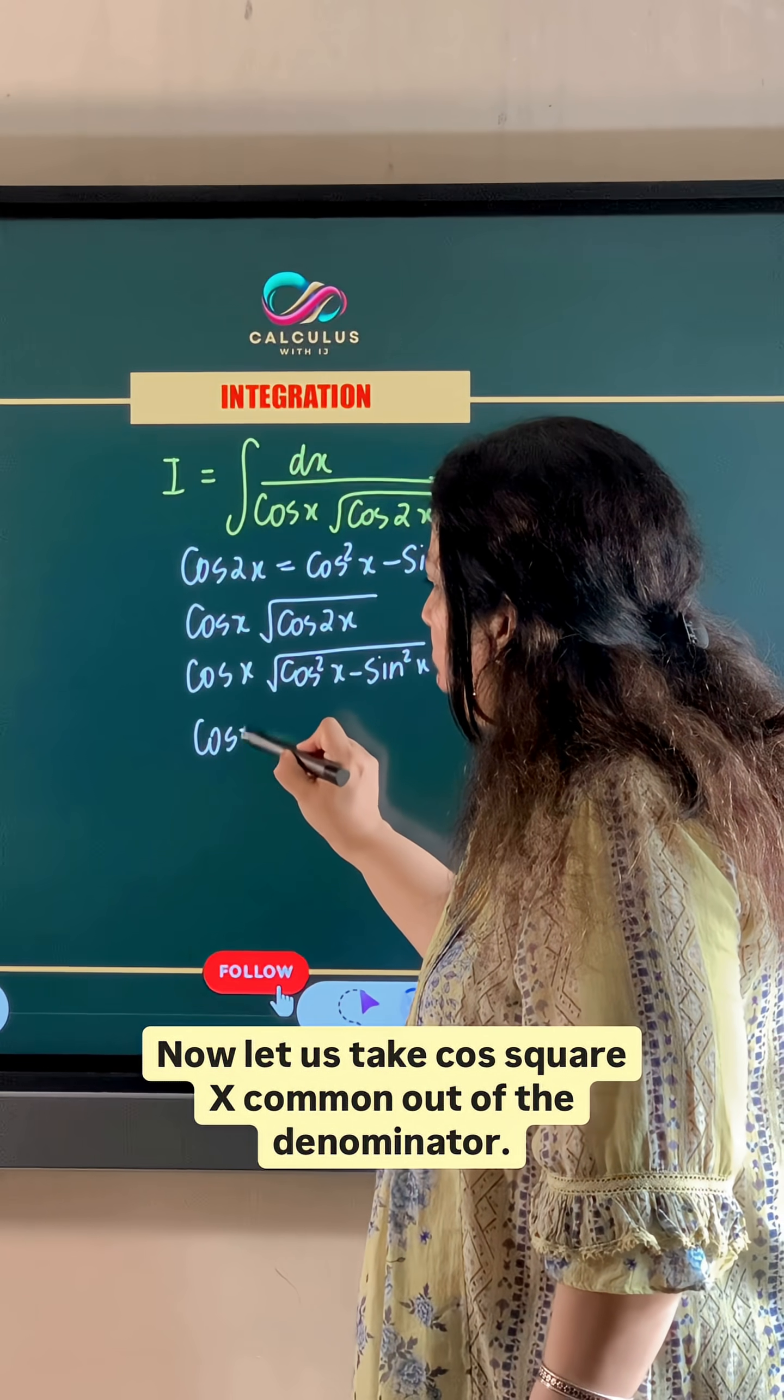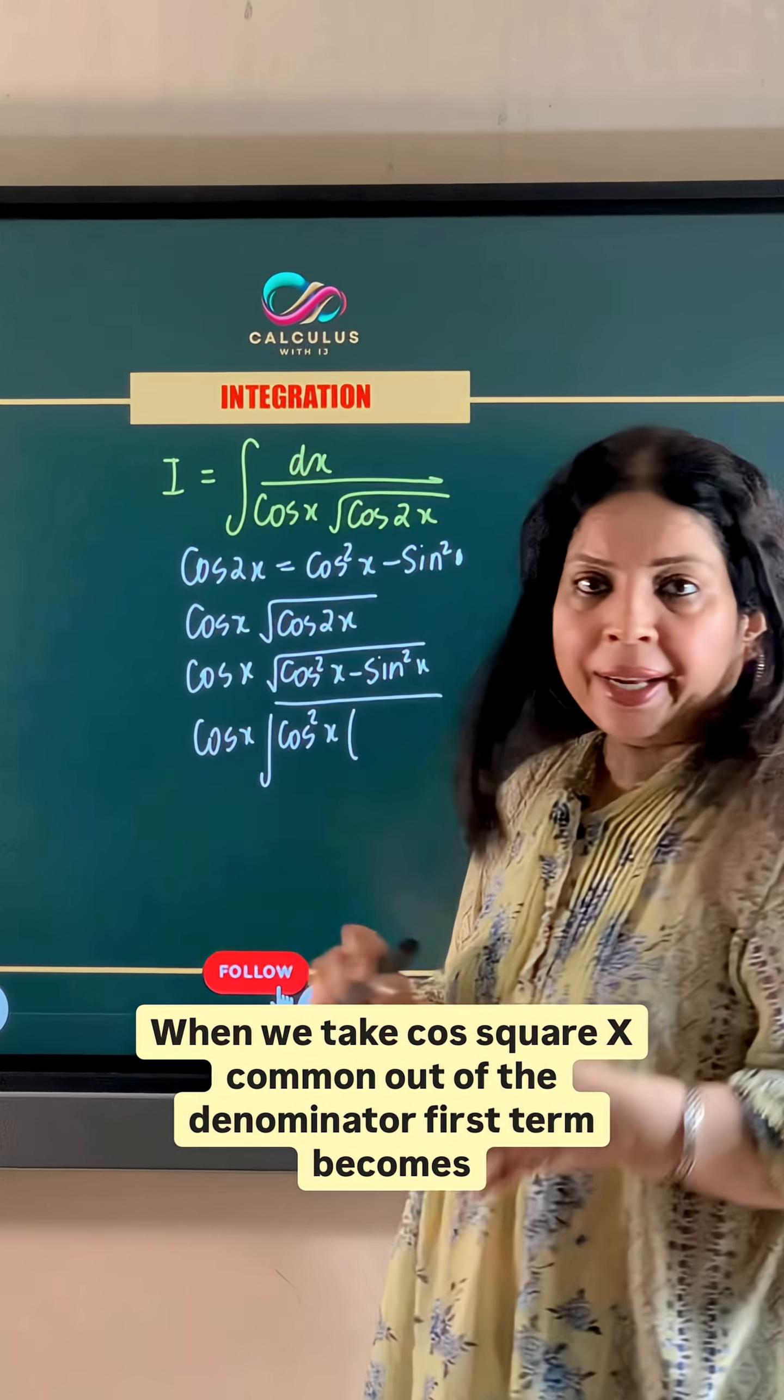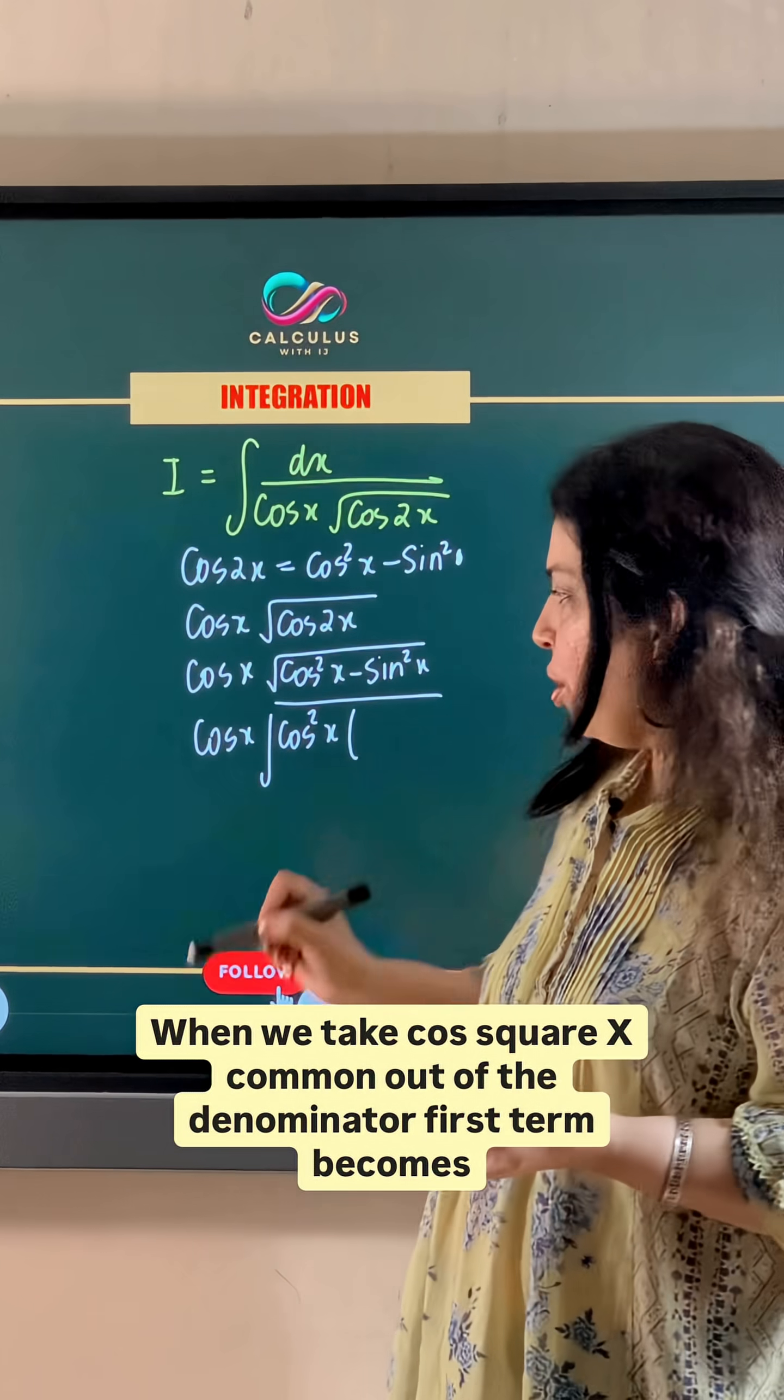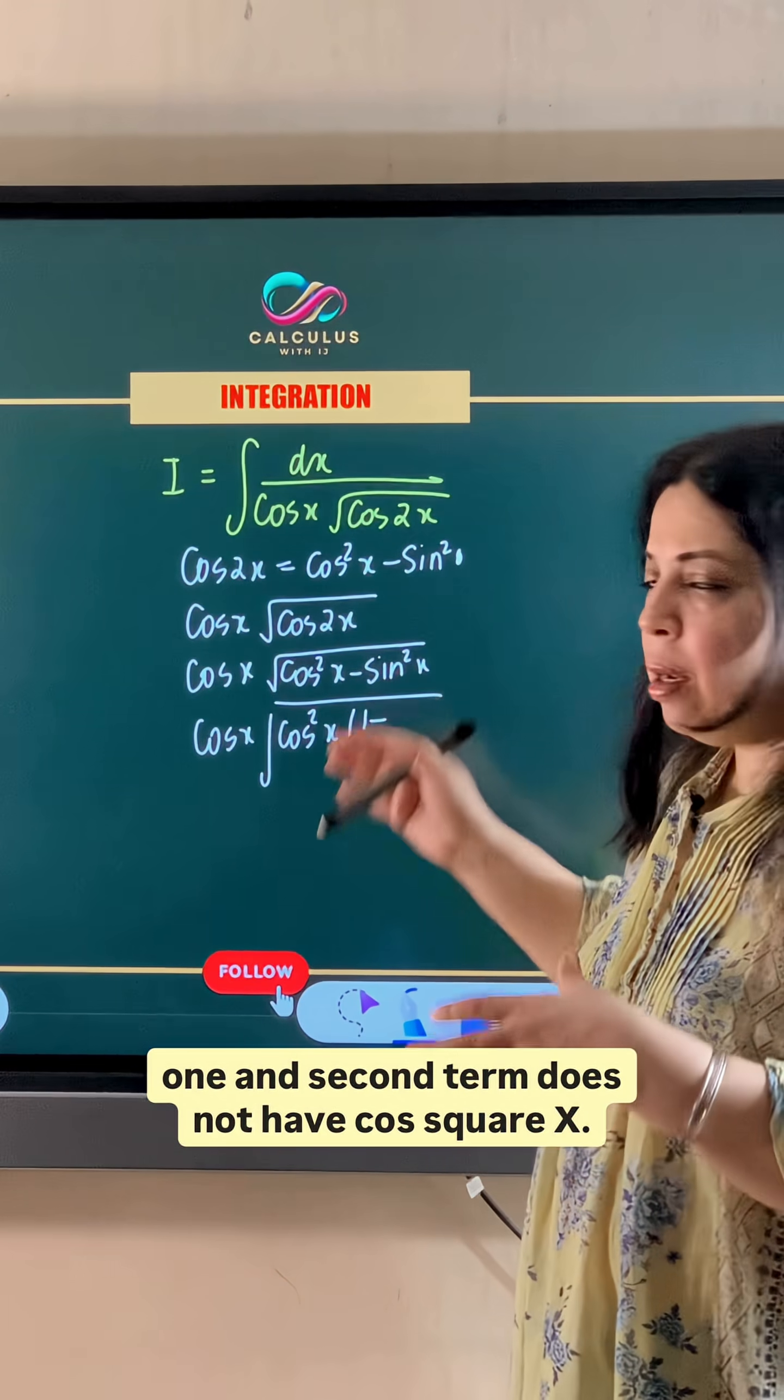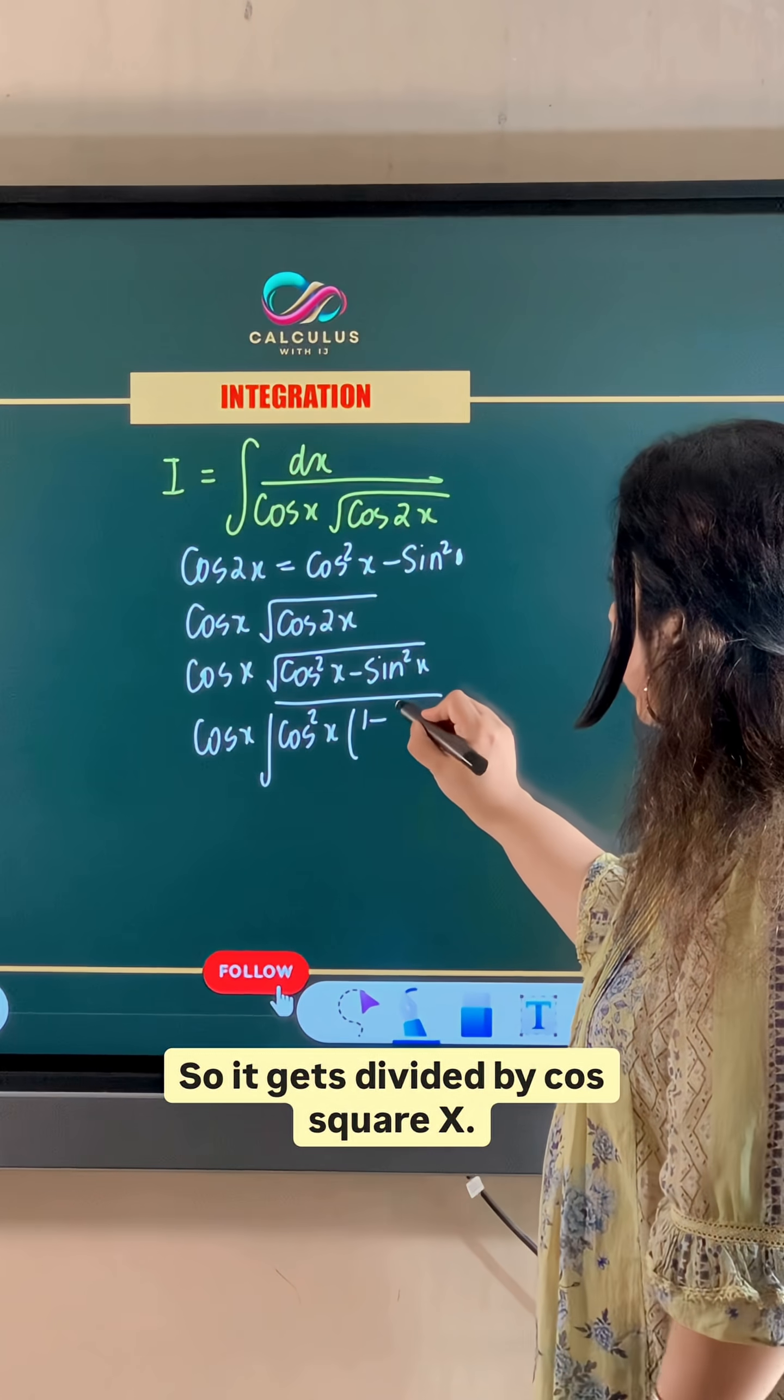now let us take cos square x common out of the denominator. When we take cos square x common out of the denominator, first term becomes 1 and second term does not have cos square x, so it gets divided by cos square x.